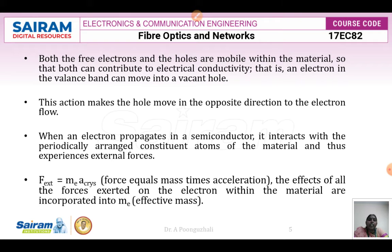An electron in the valence band can move into a vacant hole in the conduction band, and holes move in the opposite direction to electron flow. When an electron moves along the semiconductor, it interacts with the periodically arranged atoms of the material. An external force applied to the material accelerates the electrons in the valence band. The electrons have an effective mass Mₑ, so we write: external force equals Mₑ times acceleration of the crystal, i.e., force equals mass times acceleration.